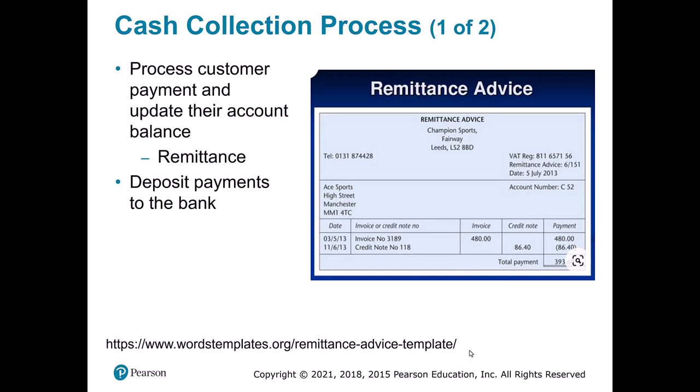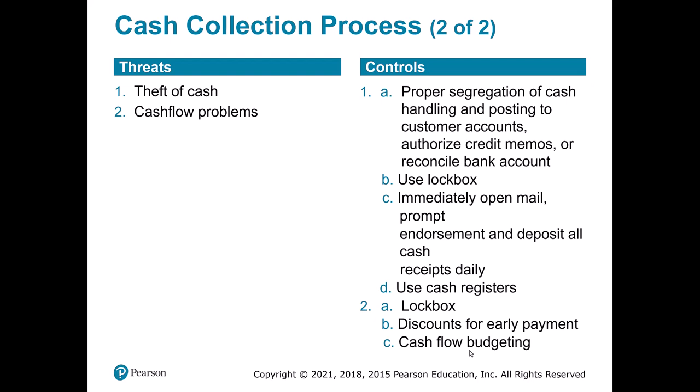Finally, we get cash. When cash comes in, the remittance advice tells us what specific sales the payment applies to and whether the customer is applying any credits. When this comes in, we split it: the remittance advice gets input into our accounting system and the payments go to the bank — we don't want the same person doing both. The key risk is theft: if the same person records and also has custody of the cash, they have the opportunity to pocket some of it. There's also the broader cash flow problem — if this long process takes too long, the company can run out of cash even while making revenue.